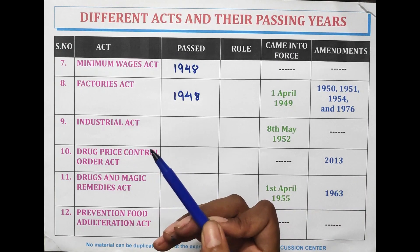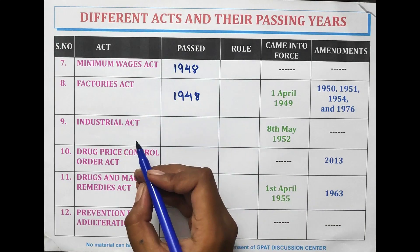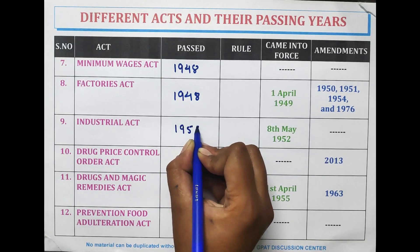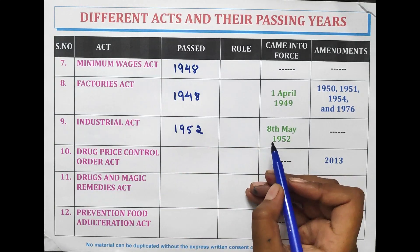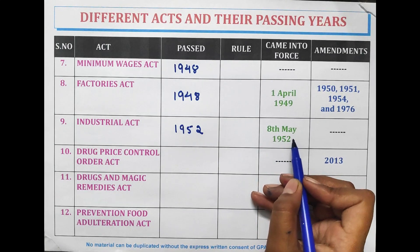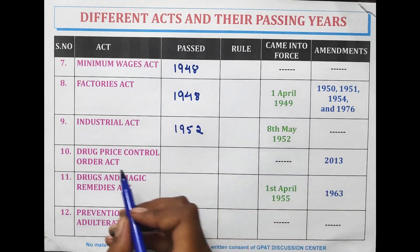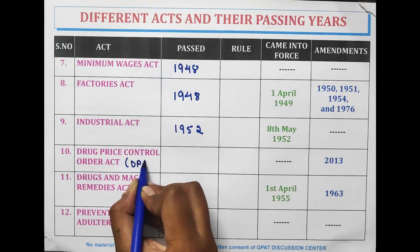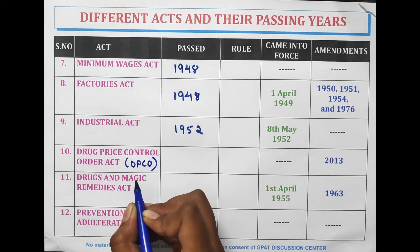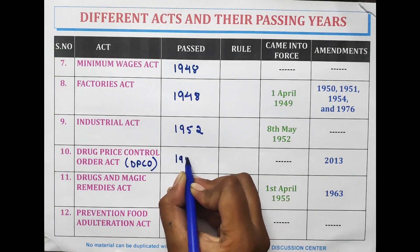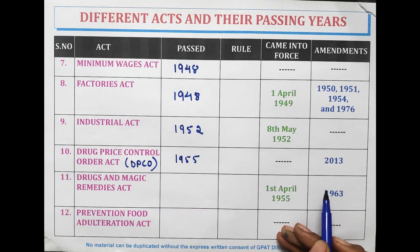The Industrial Act was passed in the year 1952 and the Drug Price Control Order Act came into force on 8 May 1952. The DPCO Act was passed in 1955 and amendments were done in the year 2013.